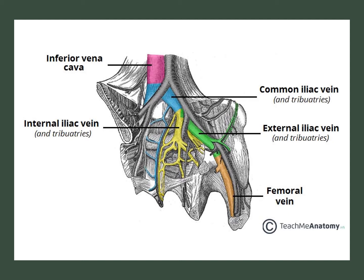The external iliac vein will confluence with the internal iliac vein. The internal iliac vein, as you can see, is the draining source of the pelvis. As the internal iliac and the external iliac confluence together, they become the common iliac vein, depicted there in blue. You have this on both the left and the right side.